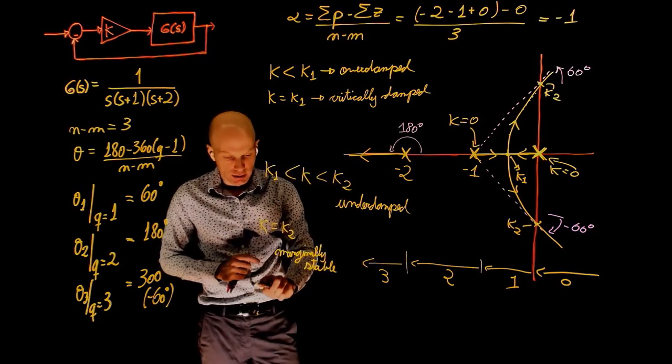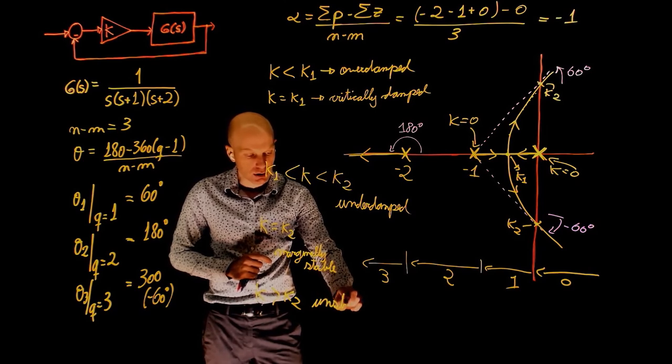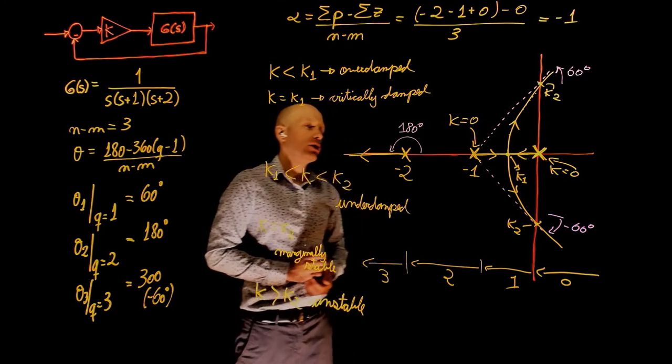And when k is greater than k2, the system is unstable. Because now these poles have a positive real part.